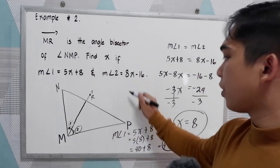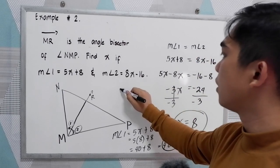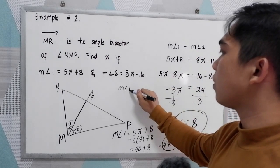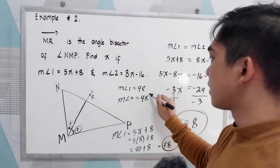So measure angle 1 is equal to 48. Since measure angle 1 is equal to measure angle 2, we can say measure angle 2 is also 48 degrees.